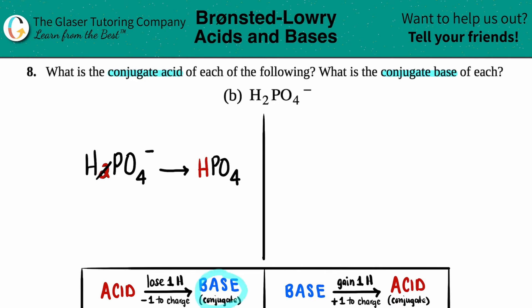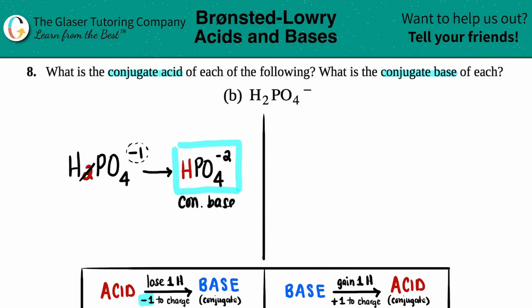Now we just have to correct for the charges. When you're forming a base, you're always going to be subtracting one from the original charge. H2PO4 was a negative one. When I come over here, it was a negative one, and since I removed a hydrogen, I'm going to subtract one. Negative one minus one is negative two. And that is your conjugate base.